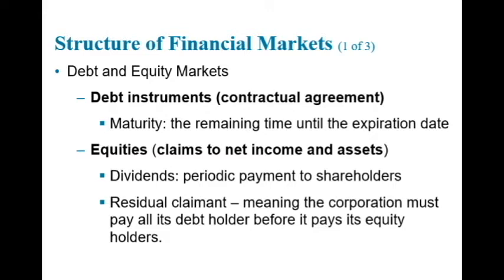The maturity of a debt instrument is the number of years, or the term, until that instrument's expiration date. A debt instrument is short term if its maturity is less than a year, and long term if its maturity is 10 years or longer. Debt instruments with a maturity between 1 and 10 years are said to be intermediate term.